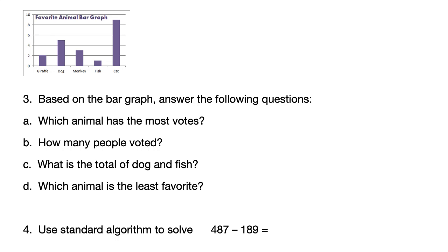Based on the bar graph, answer the following questions. A. Which animal has the most votes? B. How many people voted? C. What is the total of dog and fish? D. Which animal is the least favorite?